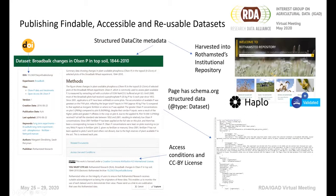The metadata from the DataCite schema can also be harvested into our own institute repository. We use a Haplo repository for the institute, and this is OpenAIRE validated, giving us further reassurance of the quality and conformance of the metadata we're providing.